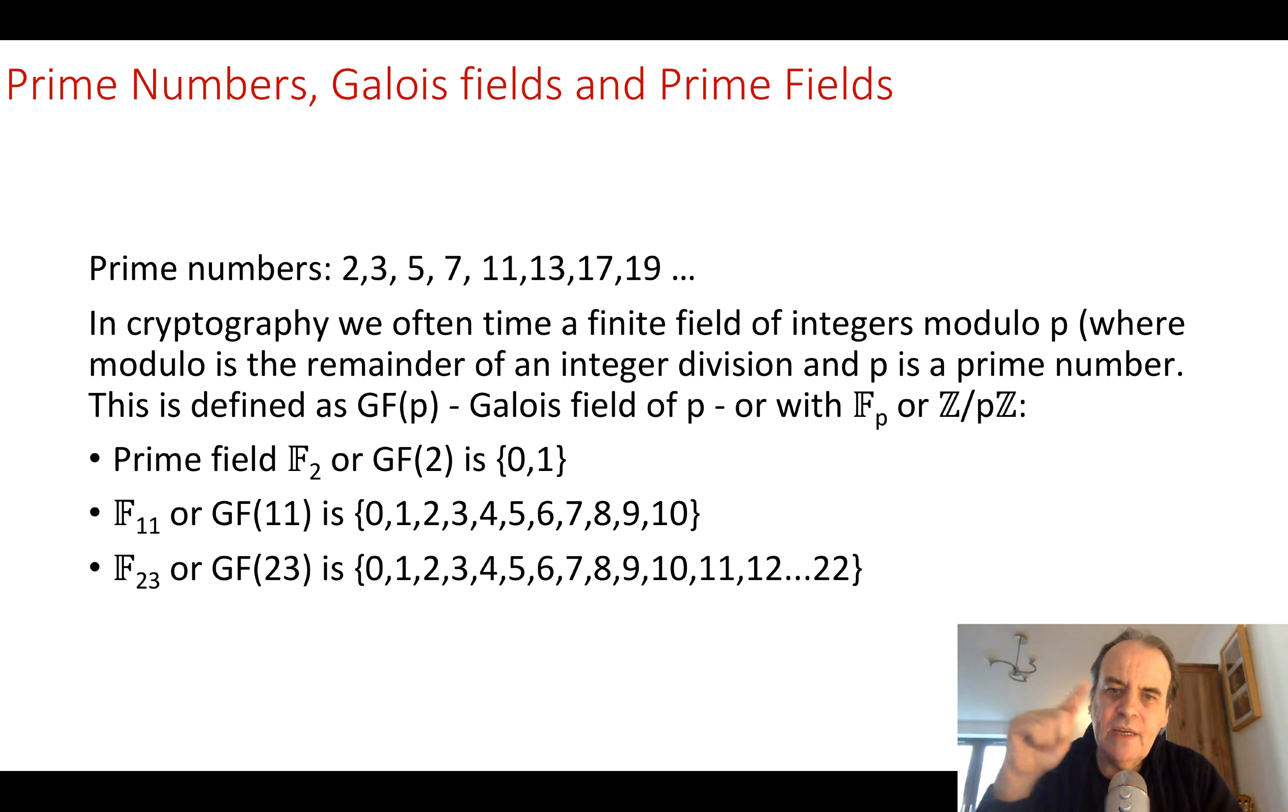It's a ring. When we have our operations, the ring rolls over and we start back at the other end again. We also define this as a Galois field of p and you also see this symbol being used for this concept.